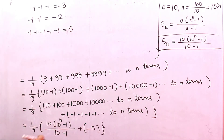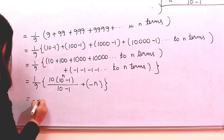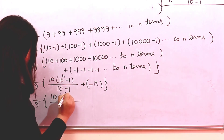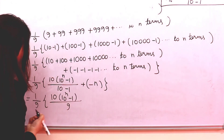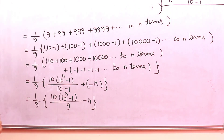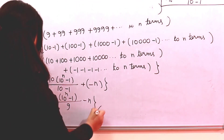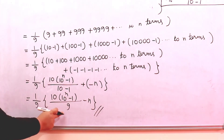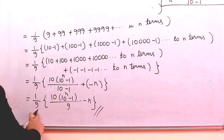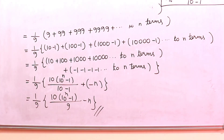Now this is the simplification. We have 1/9 times [10 × (10^n − 1) / 9 − n]. You can end your answer here, or further go for simplification, for example by taking the LCM and multiplying all values. But if you get the result up to this point, your answer is also correct.